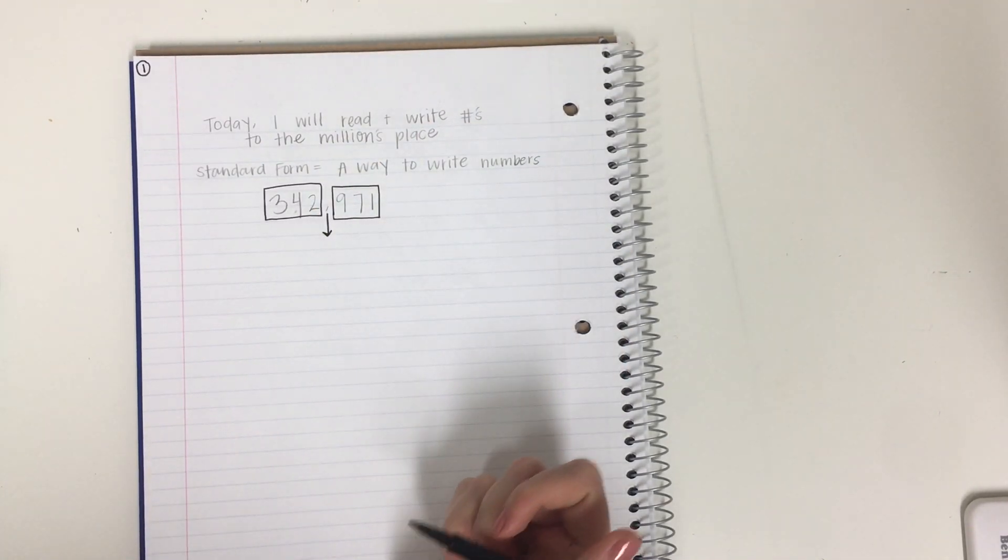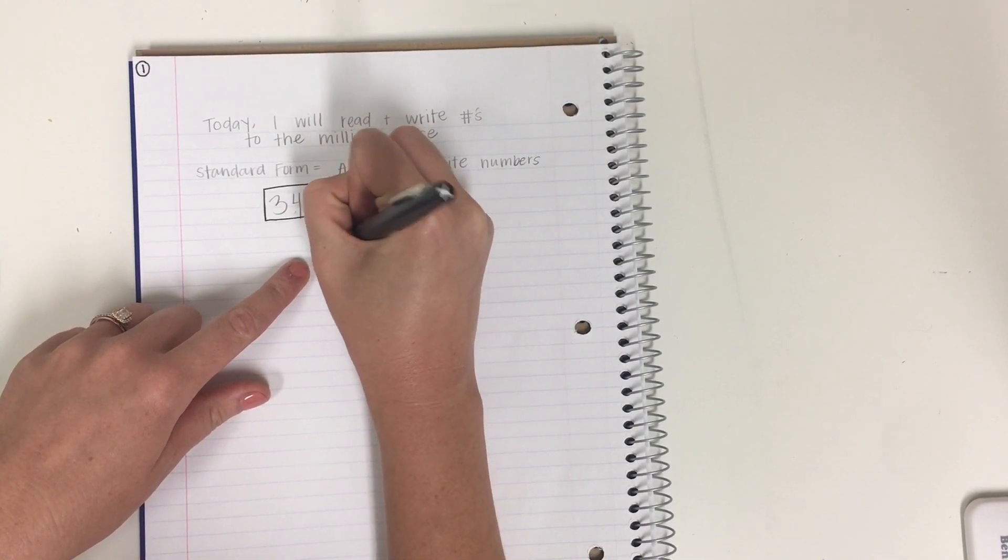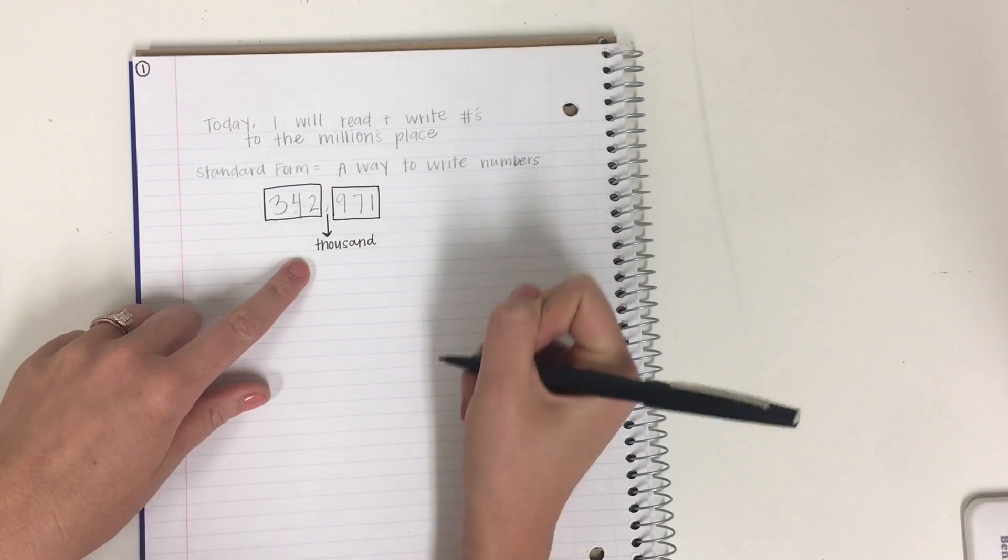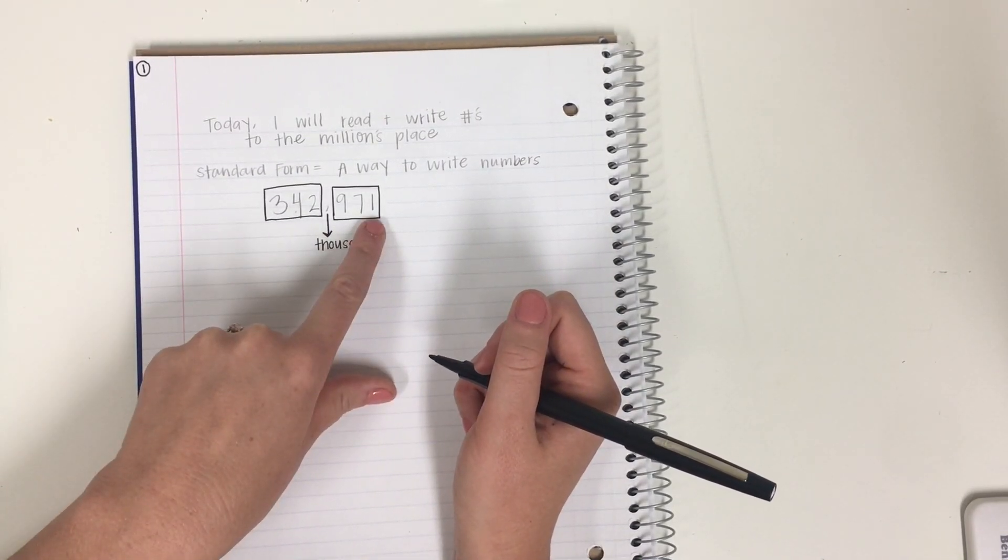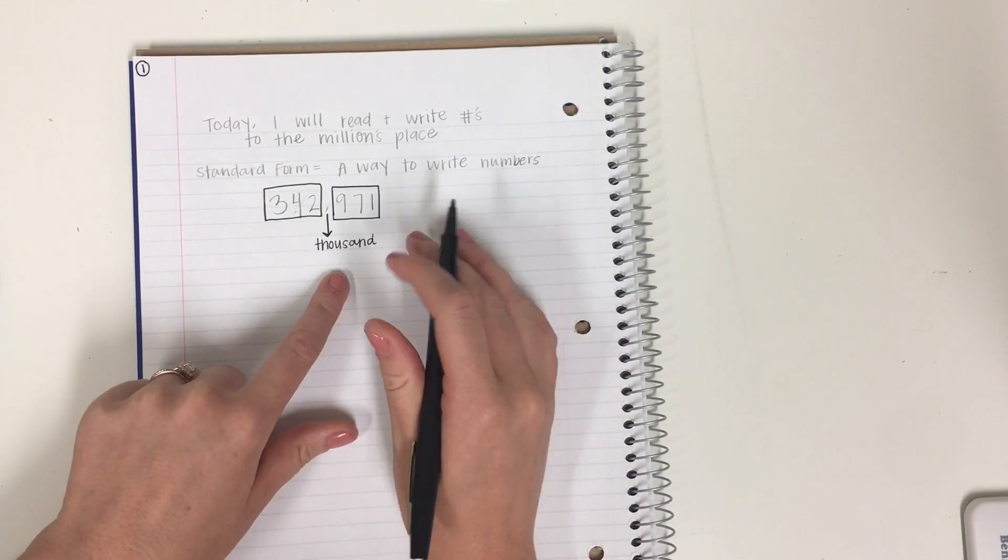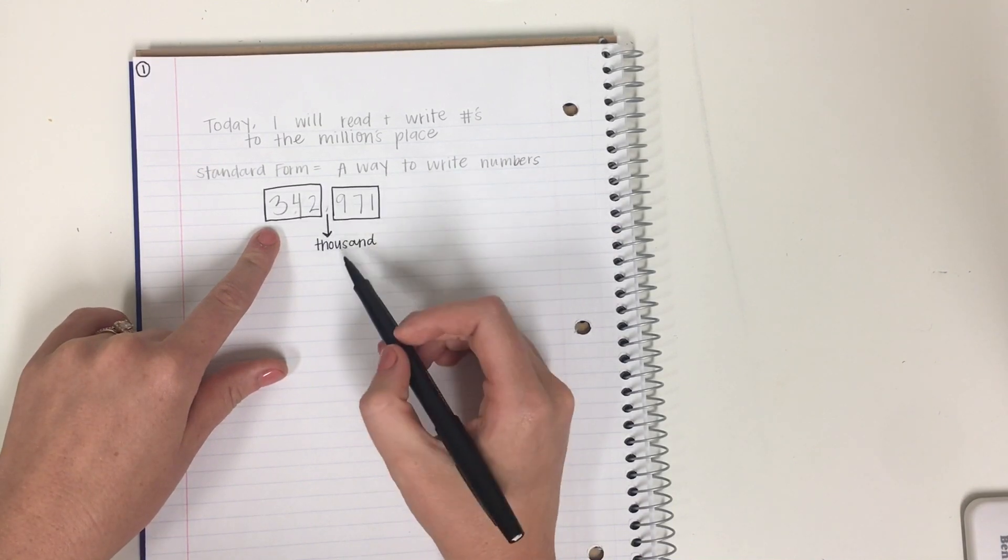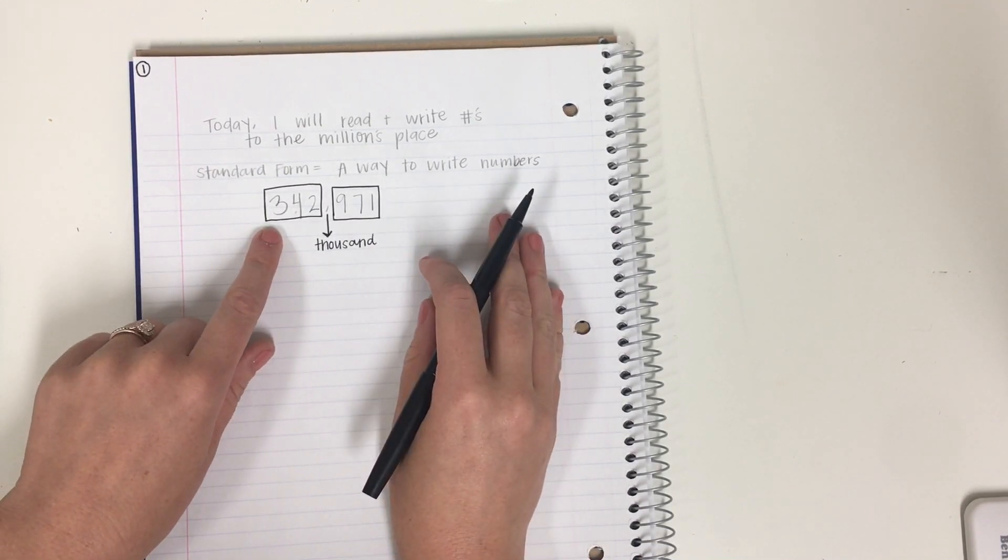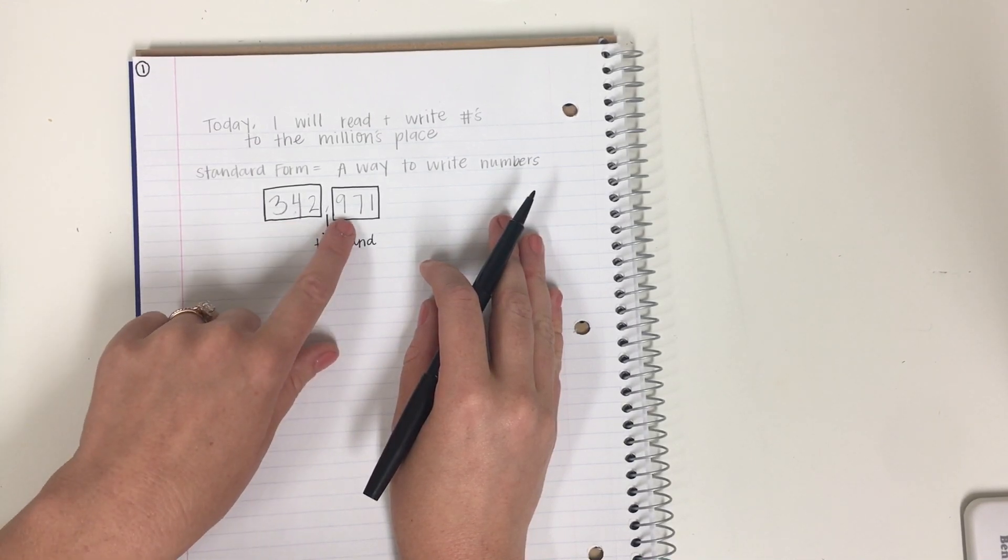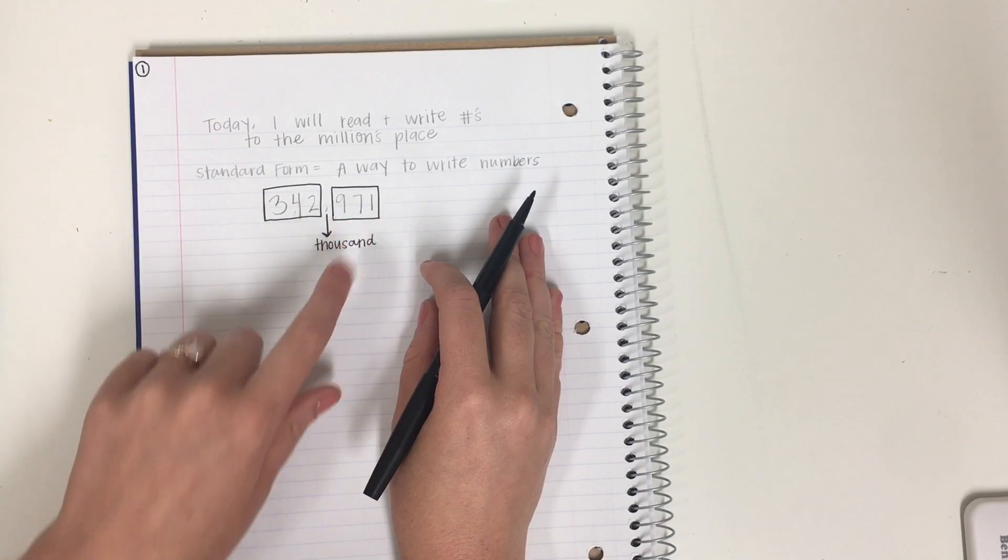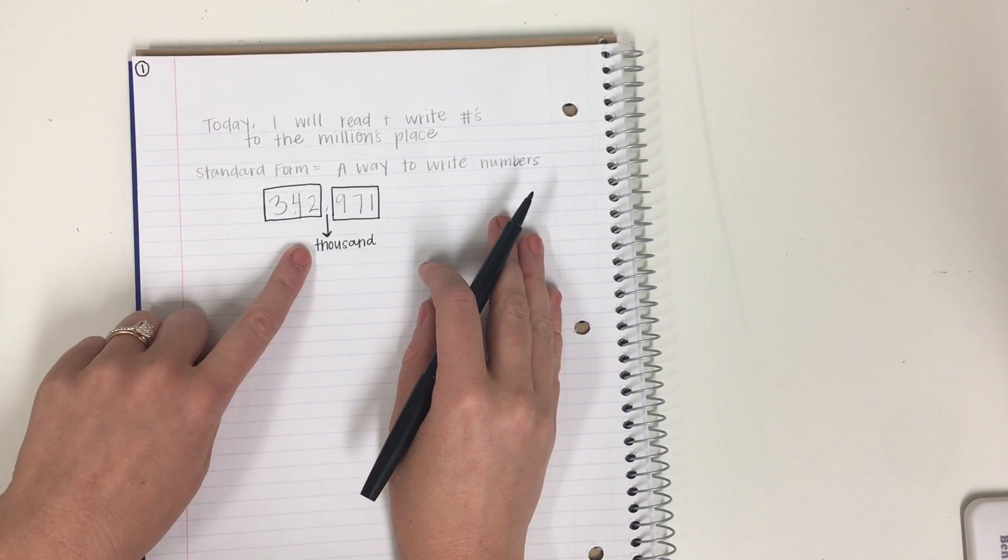If you can remember that this comma means thousand, then you are going to do just fine. Because you know you can say this number and you know you can say this number. So I'm going to show you how to read this. I would look at this number and knowing that this comma means thousand, I can read it and say 342,971.